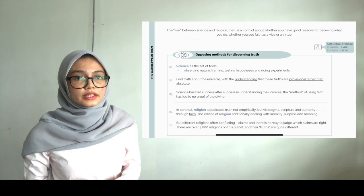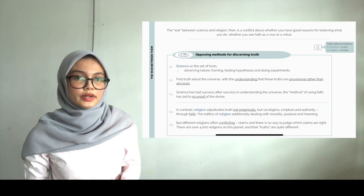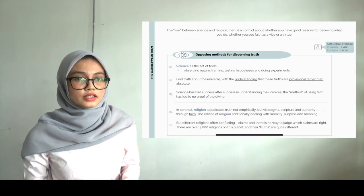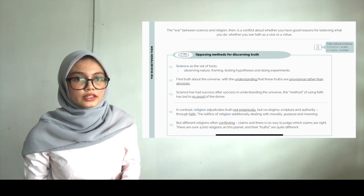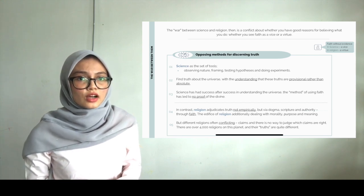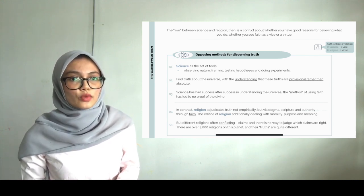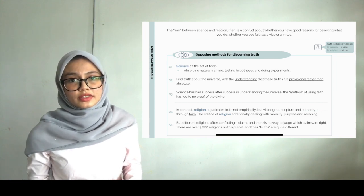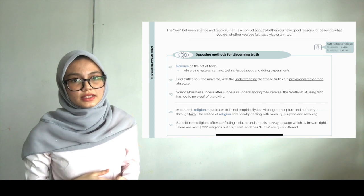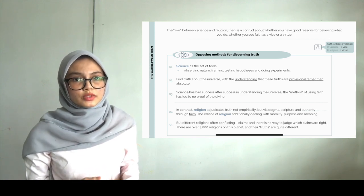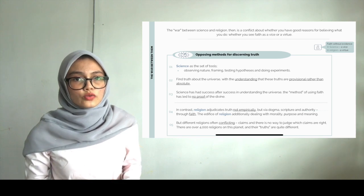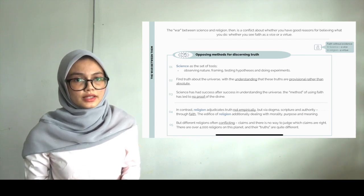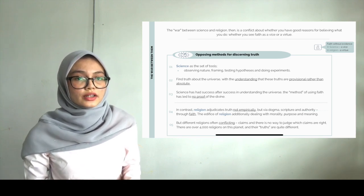In contrast, religion adjudicates truth not empirically, but via dogma, scripture, and authority, through faith. The edifice of religion additionally deals with morality, purpose, and meaning. But different religions make conflicting claims, and there's no way to judge which claims are right. There are over 4,000 religions on this planet, and their truths are quite different.